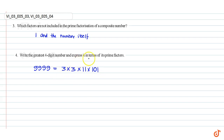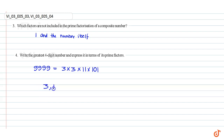Therefore, the prime factors of 9999 are 3, 11, and 101. That is our answer.